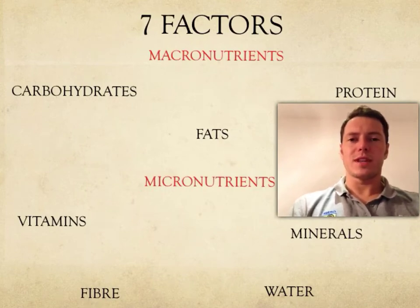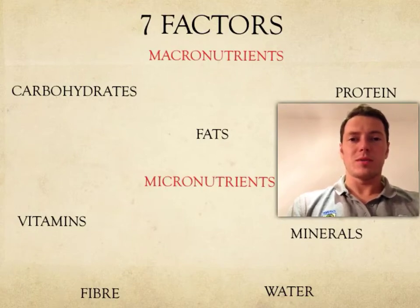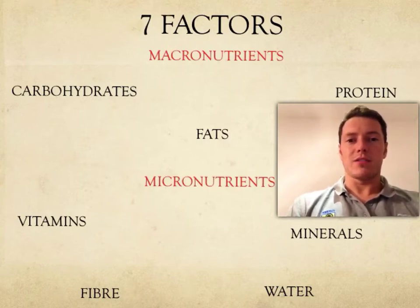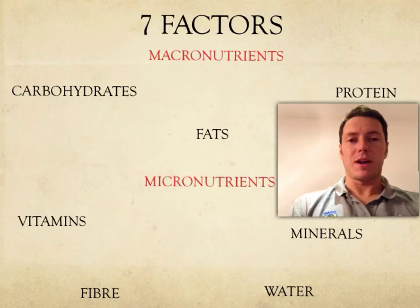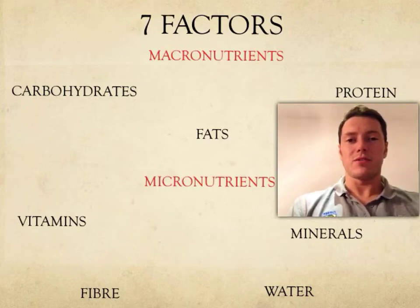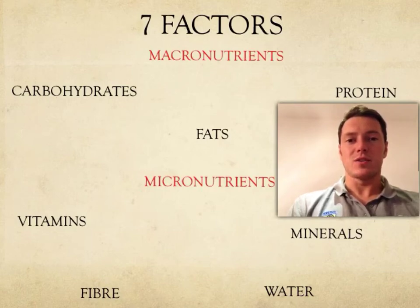By now, you should have a better knowledge and understanding of what the term diet means. Within this slide, we're going to be focusing on learning objectives one and two — looking at the seven factors that contribute to a balanced diet, and categorising these seven factors into either micro or macronutrients. First off, we have the macronutrients. These are the larger food groups that we need to intake on a daily basis and these include carbohydrates, fats and proteins. We also have the micronutrients — the smaller food groups needed daily, which include vitamins and minerals. It is also really important to understand the terms fibre and water and the importance that these have on having a balanced diet.